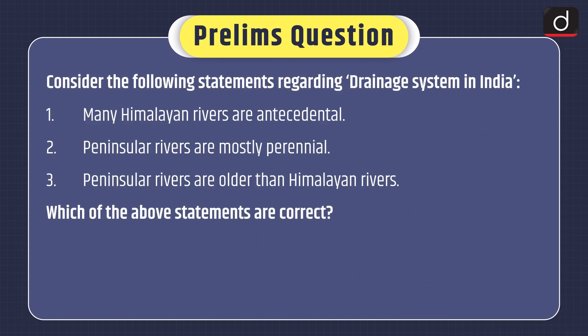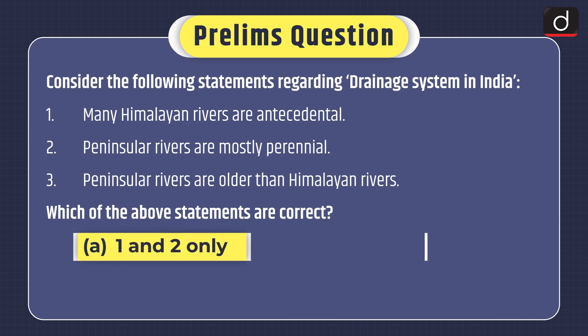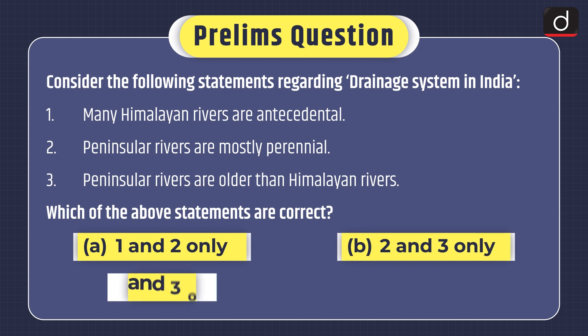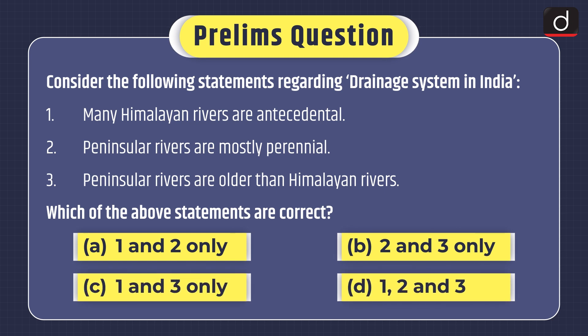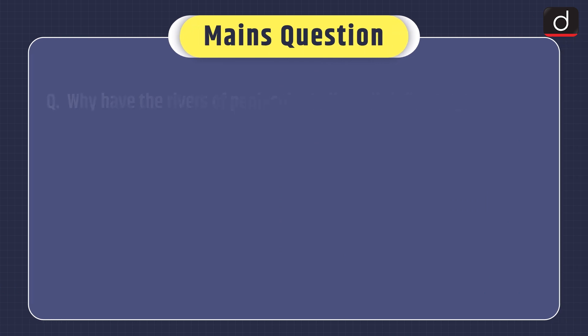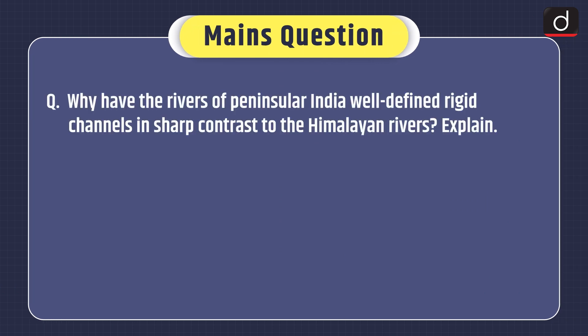Now for practice questions. Prelims question: Consider the following statements regarding the drainage system in India. (1) Many Himalayan rivers are antecedent. (2) Peninsular rivers are mostly perennial. (3) Peninsular rivers are older than Himalayan rivers. Which of the above statements are correct — 1 and 2 only, 2 and 3 only, 1 and 3 only, or 1, 2 and 3? Mains question: Why have the rivers of Peninsular India well-defined rigid channels in sharp contrast to the Himalayan rivers? Explain.